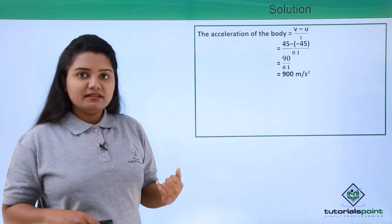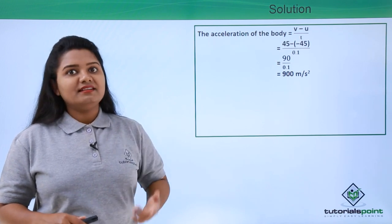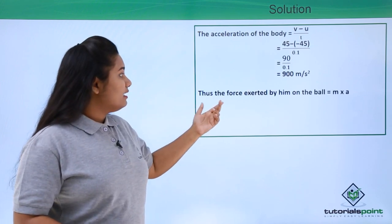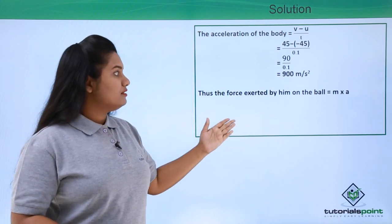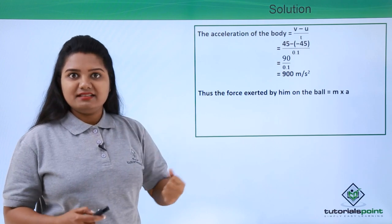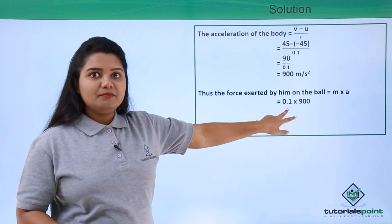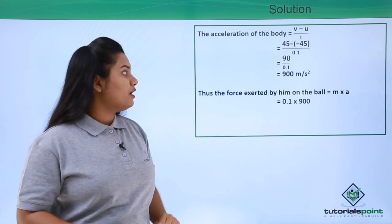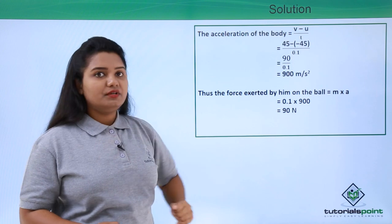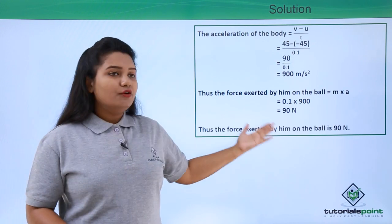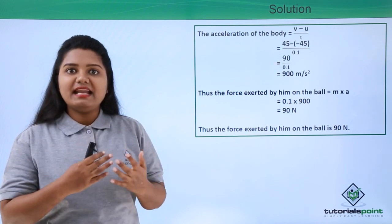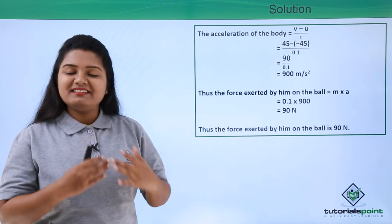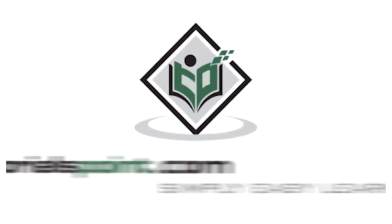Now that we have the acceleration, we can find the force exerted by the racket on the ball. Force = mass × acceleration = 0.1 kg × 900 m/s² = 90 Newtons. So the force exerted by the racket on the ball is 90 Newtons. I hope this solution was fully understandable to you. Thanks for watching TutorialsPoint.com — simply easy learning.